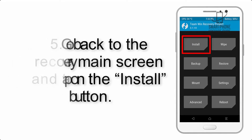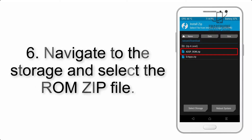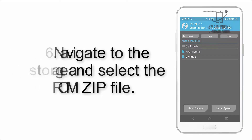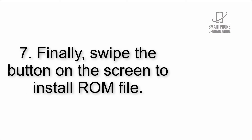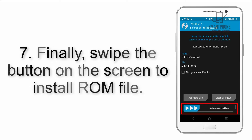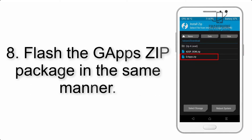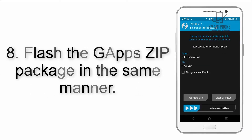Step 5: Go back to the recovery main screen and tap on the Install button. Step 6: Navigate to the storage and select the ROM zip file. Step 7: Finally, swipe the button on the screen to install the ROM file.